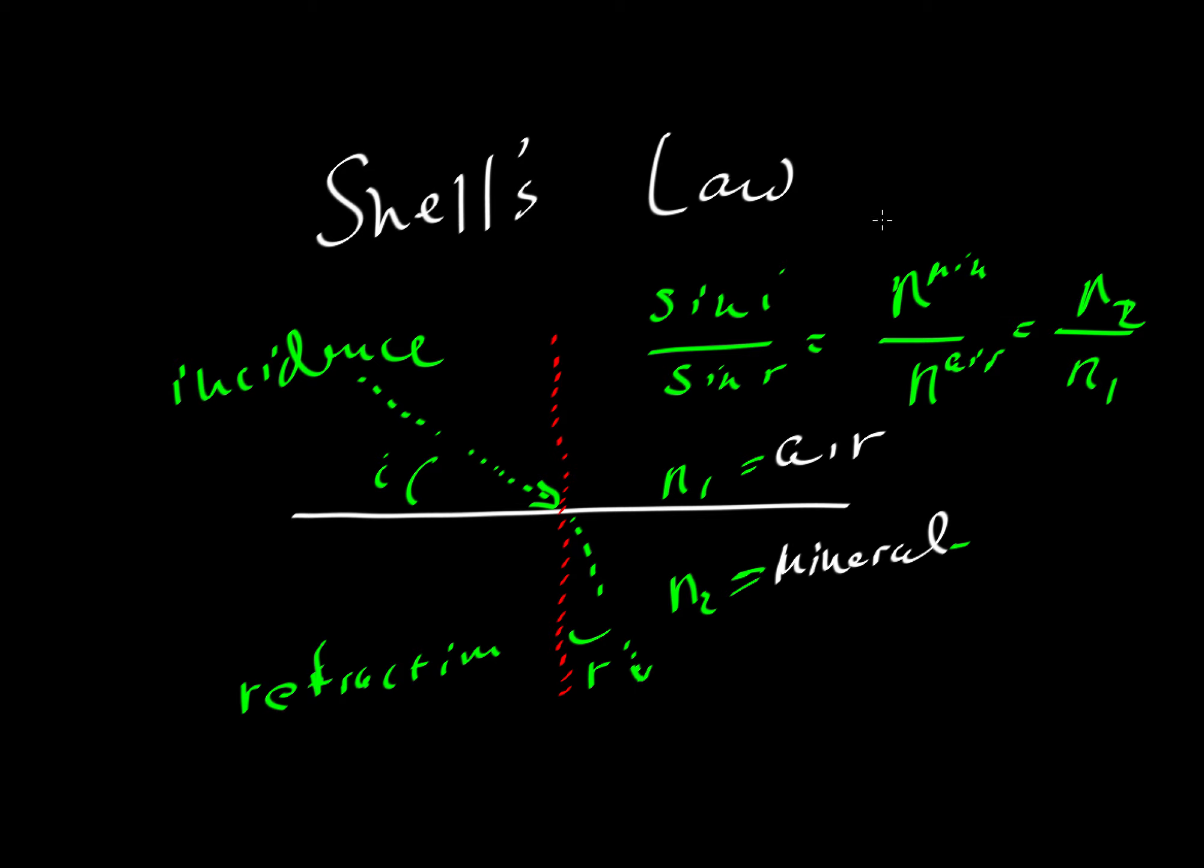But if we're interested in the velocity of light in a mineral, and we know that the value for air is close to 1, then that one drops out. Let's erase the chalkboard and just rewrite that equation again.